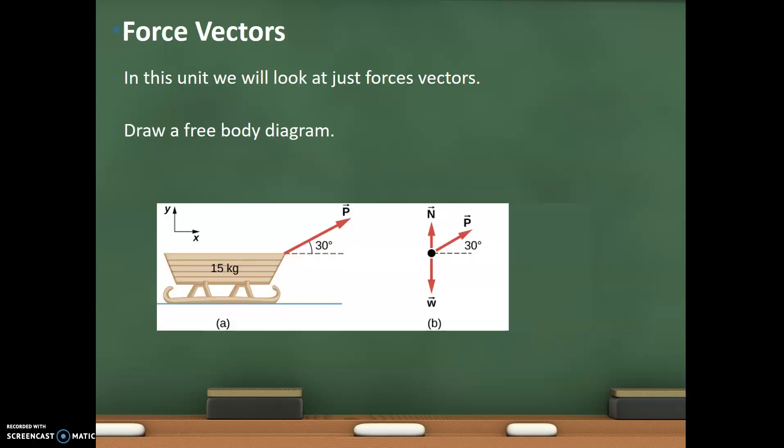So force vectors, we're going to look at them, but we have to first look at free body diagrams. So what we're going to do is we're going to take this sled that's being pulled by a force at 30 degrees from the horizontal. So we can actually redraw that as a free body diagram. Again, we represent this sled as a dot, and it's being pulled up and to the right by 30 degrees, and you have your normal force, and you have your gravity pulling down.